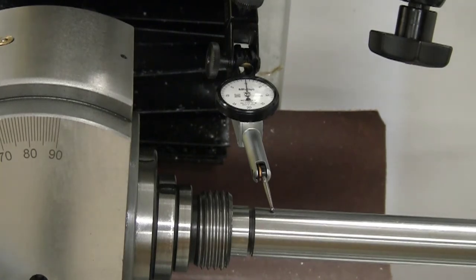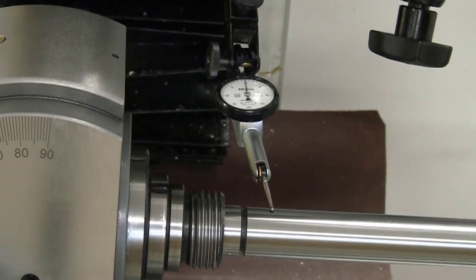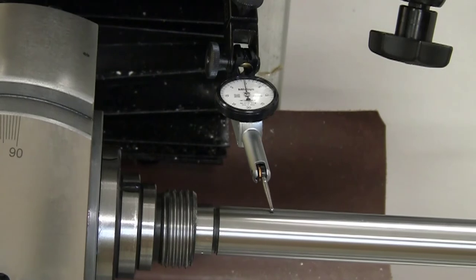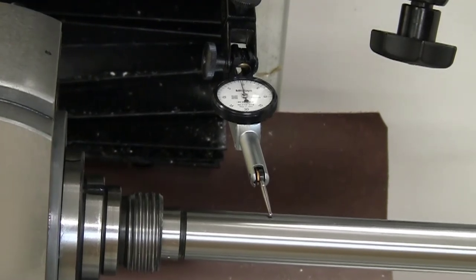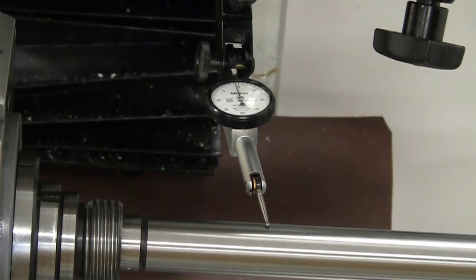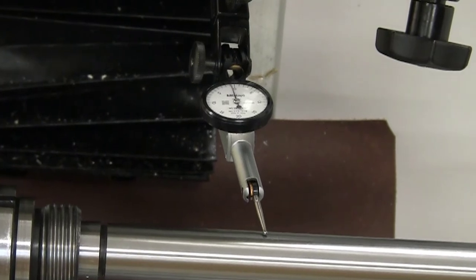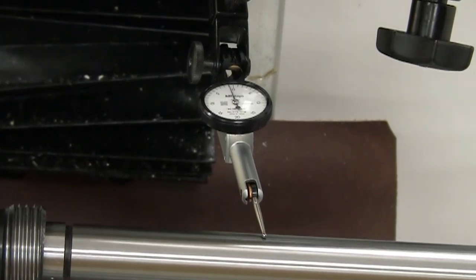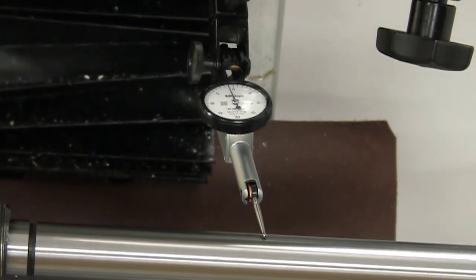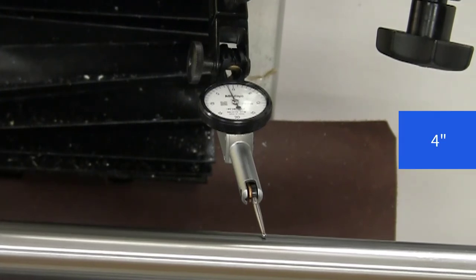So the first thing I'm going to do is to find the highest spot on the bar by moving in the y-axis, and then I'm going to move along in the x-axis for a distance of about 8 inches. So gradually moving along and watching the indicator. Now the indicator might move a little bit, and that's okay.